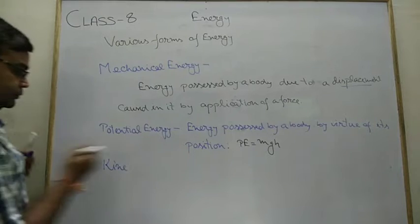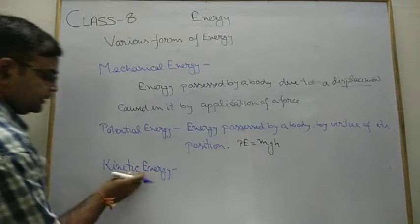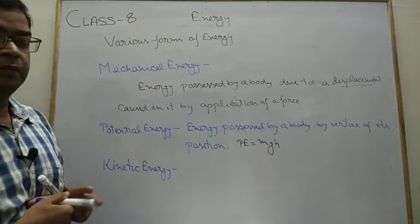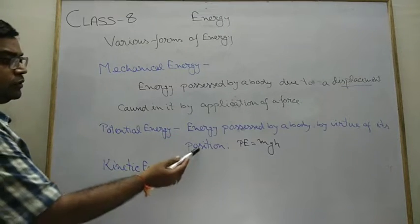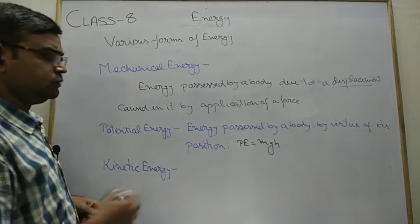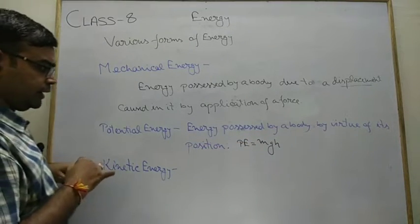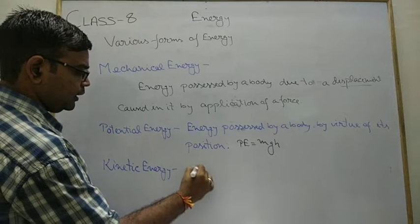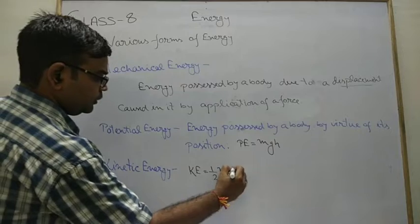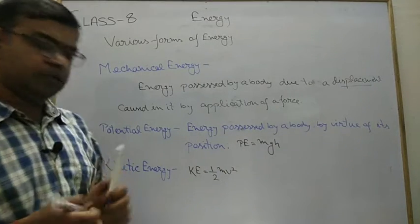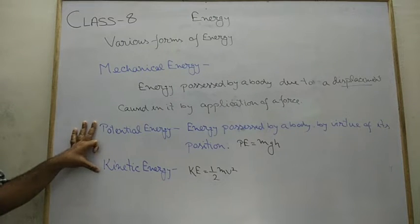Then kinetic energy. As name defined, this energy contains some movement. Energy possessed by a body by virtue of its motion is known as your kinetic energy. Same difference, but in this case change the position to motion only. Energy possessed by a body by virtue of its motion is known as your kinetic energy. And formula of kinetic energy is KE equals to half of m for mass, v for velocity of that moving body, and square of v.